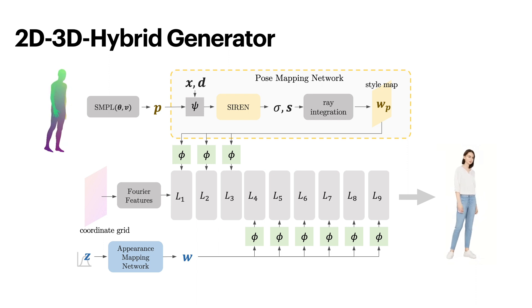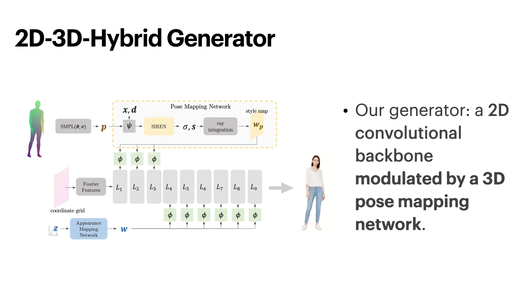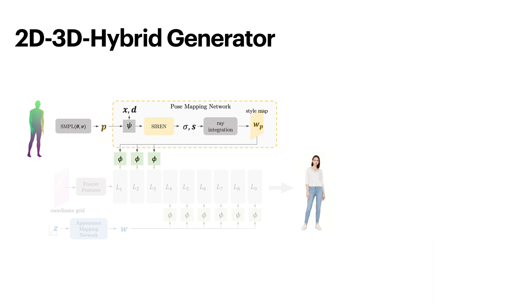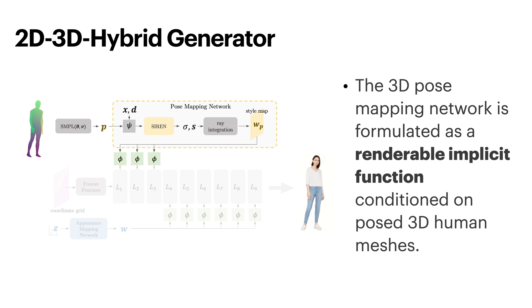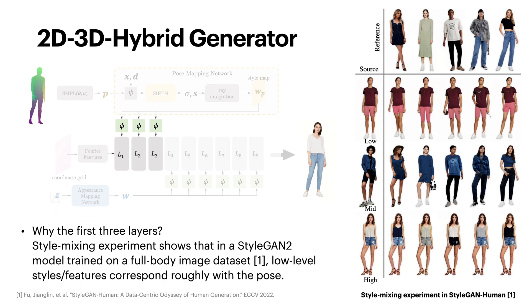We propose a novel generator architecture in which a 2D convolutional backbone is modulated by a 3D pose mapping network. The 3D pose mapping network is formulated as a renderable implicit function conditioned on posed 3D human meshes. This design has several merits: it allows us to harness the power of 2D GANs to generate photorealistic images, it generates consistent images under varying view angles and specifiable poses, and the model can benefit from the 3D human prior. This design is motivated by the observation that in a StyleGAN2 model trained on human images, certain layers of styles correlate strongly with the pose of the generated human while others correlate more with the appearance.